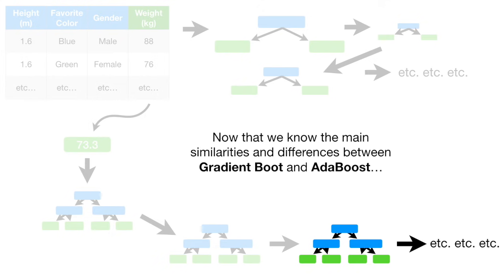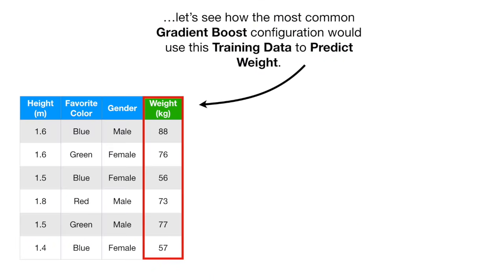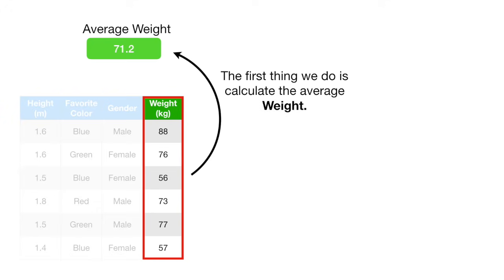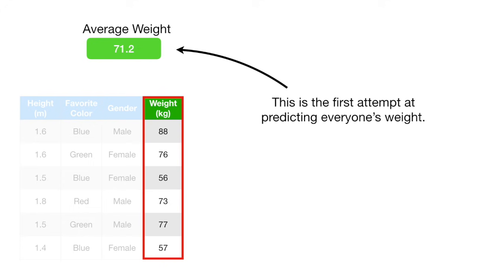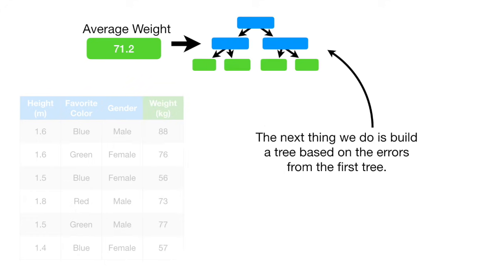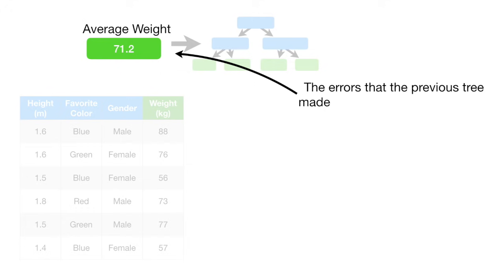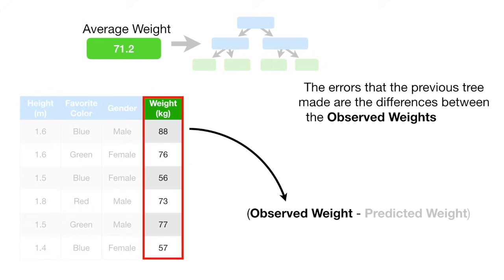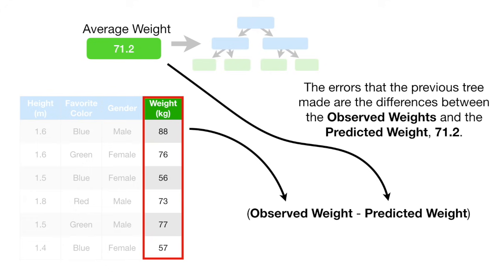Now that we know the main similarities and differences between Gradient Boost and Adaboost, let's see how the most common Gradient Boost configuration would use this training data to predict weight. The first thing we do is calculate the average weight — this is the first attempt at predicting everyone's weight. In other words, if we stopped right now, we would predict that everyone weighed 71.2 kilograms. However, Gradient Boost doesn't stop here. The next thing we do is build a tree based on the errors from the first tree. The errors are the differences between the observed weights and the predicted weight, 71.2.